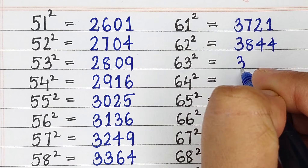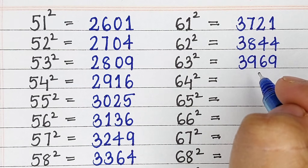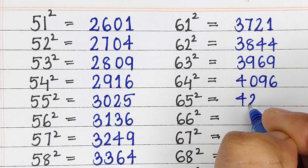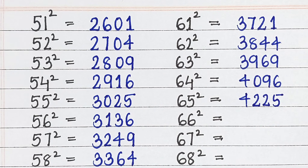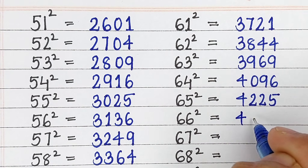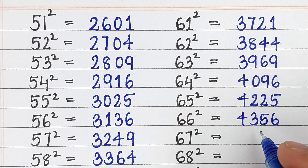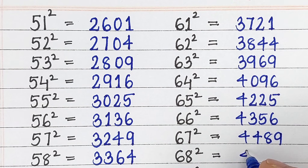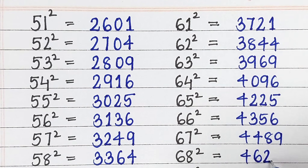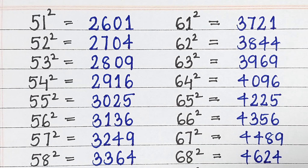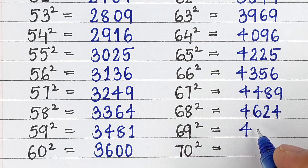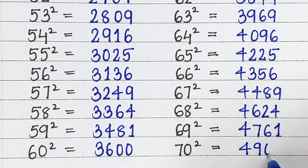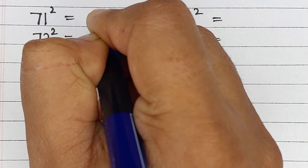Square of 62 is 3844, square of 63 is 3969, square of 64 is 4096, square of 65 is 4225, square of 66 is 4356, square of 67 is 4489, square of 68 is 4624, square of 69 is 4761, square of 70 is 4900.